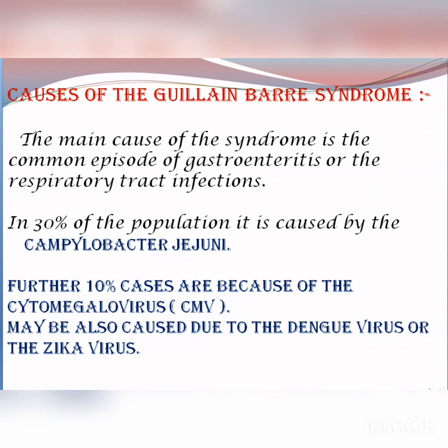Guillain-Barré syndrome is caused in 30% of the population by a bacterium called Campylobacter jejuni, whereas in 10% of cases it is caused by a virus known as cytomegalovirus. There are some other viruses which can also be the cause of Guillain-Barré syndrome, including the dengue virus and the Zika virus.